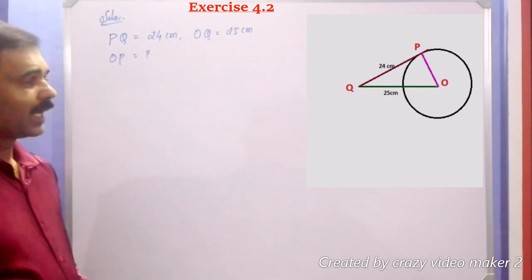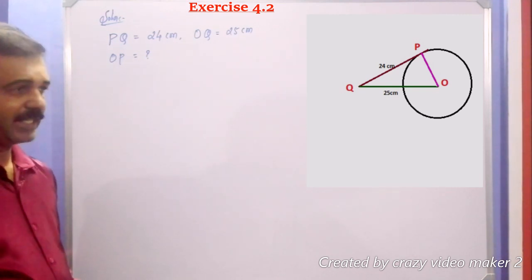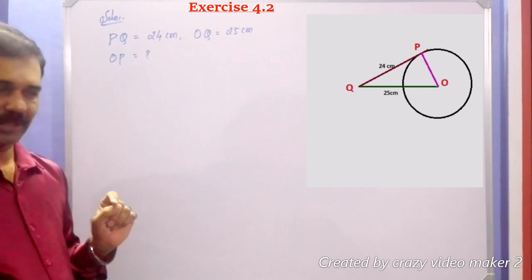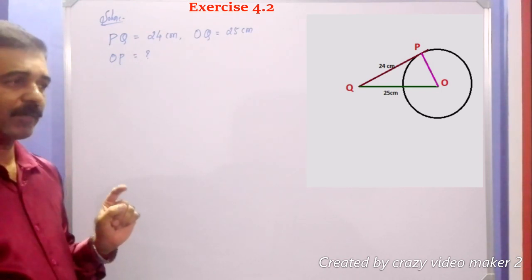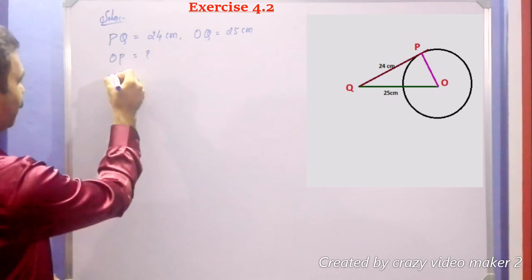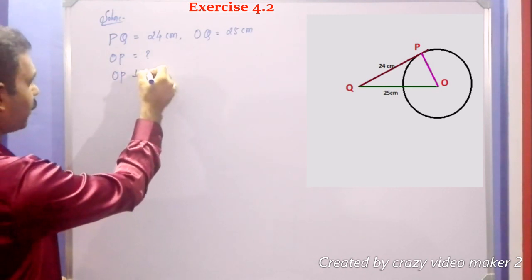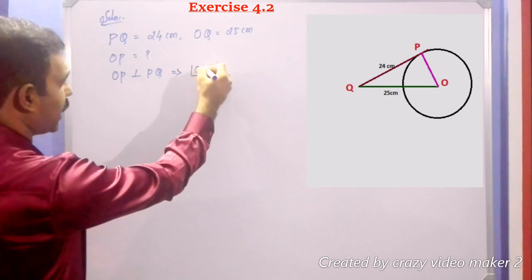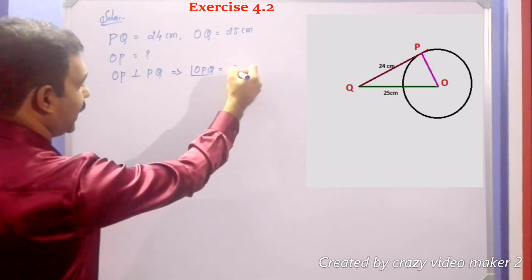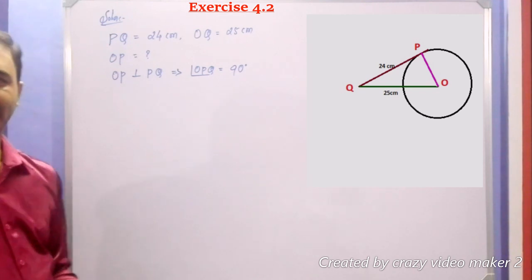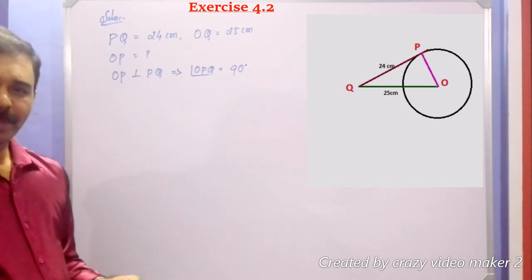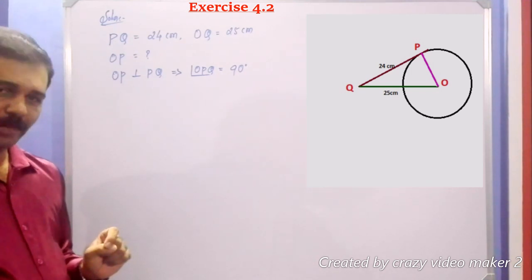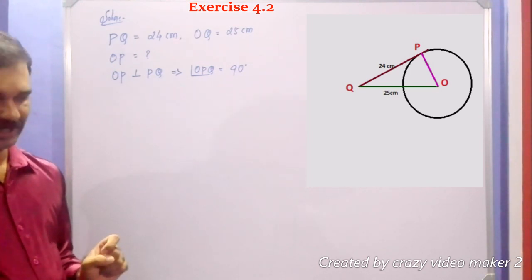Now, in the given figure, OP is the radius and PQ is the tangent. So OP is perpendicular to the tangent — that is, OP perpendicular to PQ — by theorem 4.1, which states the radius is perpendicular to the tangent. So angle OPQ equals 90 degrees. Therefore, triangle OPQ is a right-angled triangle.